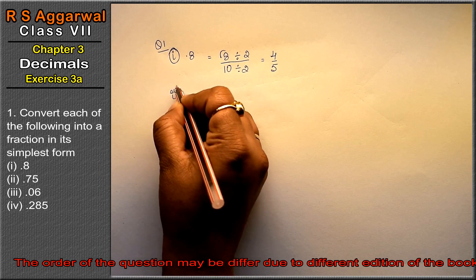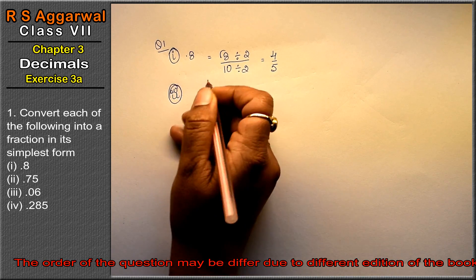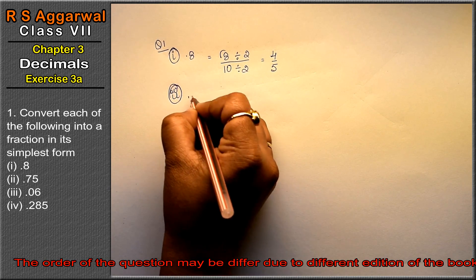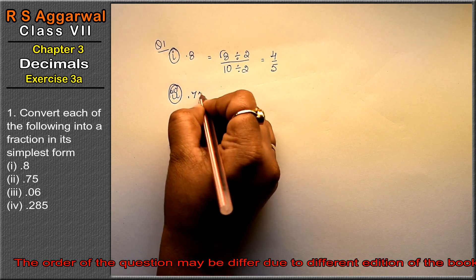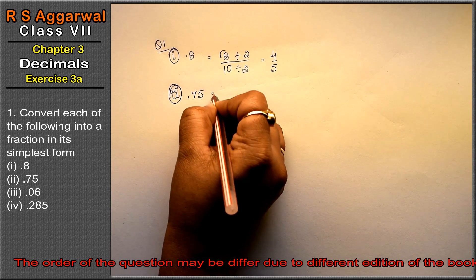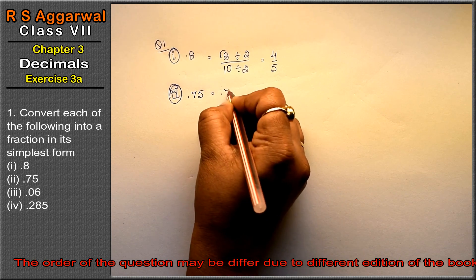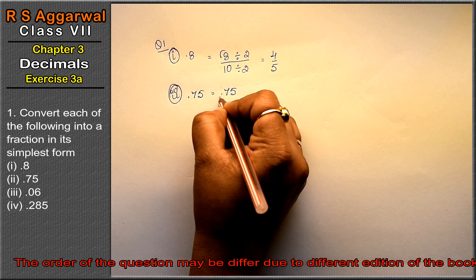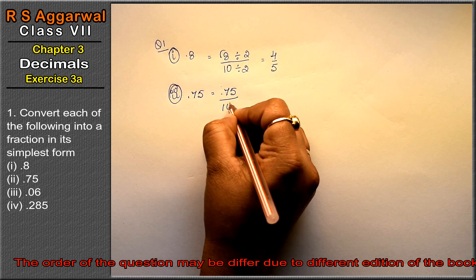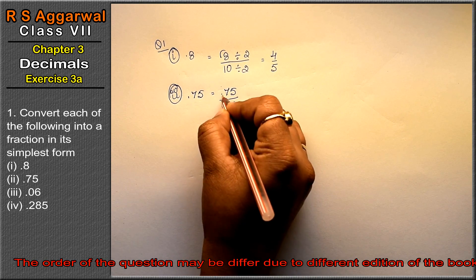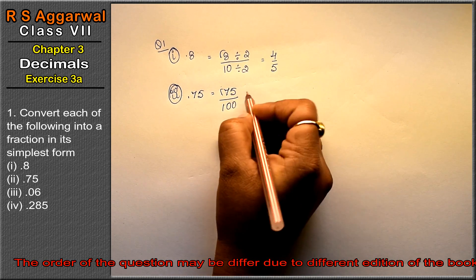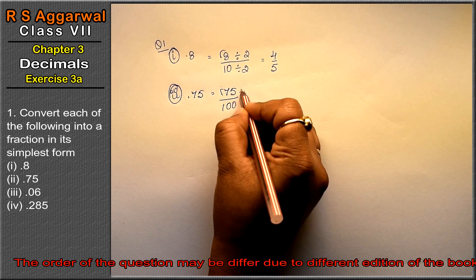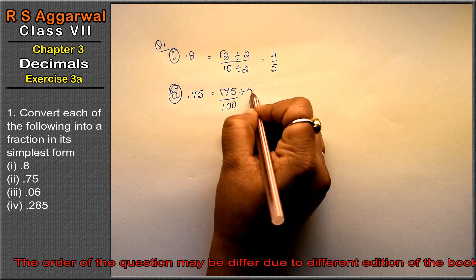Let's do the second part. Second part is 0.75. Since there are 2 digits after the decimal point, we write it as 75 over 100. Now we will change the point and simplify.